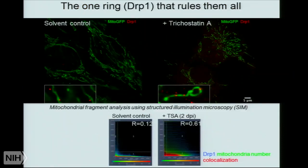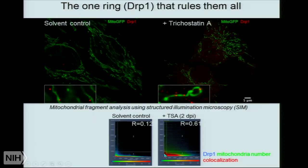We can tell whether it's a dilated ring or a constricted ring, and we can count these rings in a non-reactivated cell versus a reactivated cell. In solvent-controlled cells, there is DRP1 stained by red, but it is in the cytoplasm, not on the mitochondria. But in cells reactivating the virus, the DRP1 rings are increased and forming rings around the mitochondria. Quantitative analysis using Pearson's coefficient confirms that DRP1 is on the mitochondria in reactivating cells.